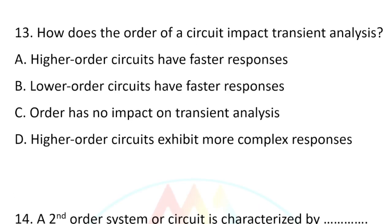Question number thirteen: How does the order of a circuit impact transient analysis? Option A, higher order circuits have faster response. Option B, lower order circuits have faster response. Option C, order has no impact. Option D, higher order circuits exhibit more complex responses.